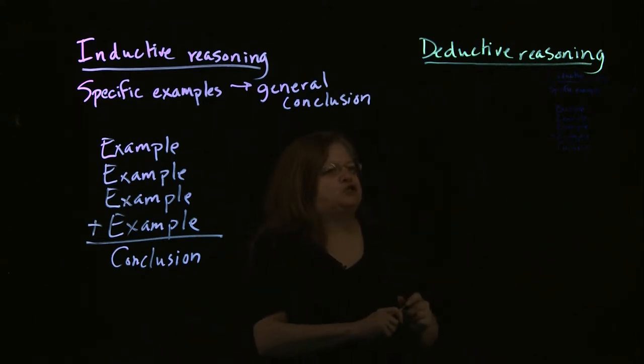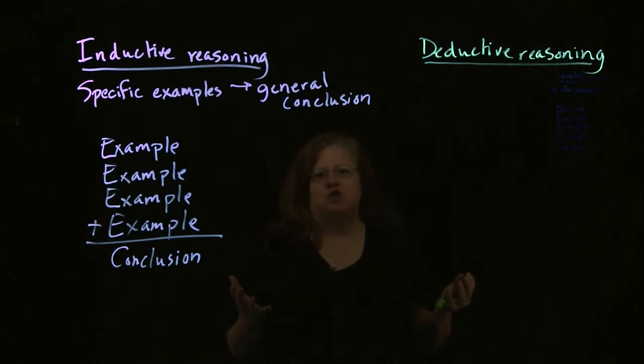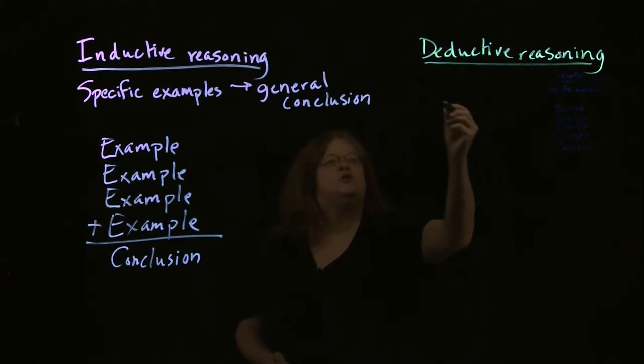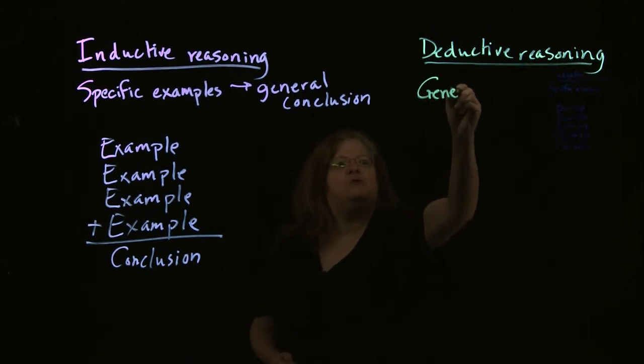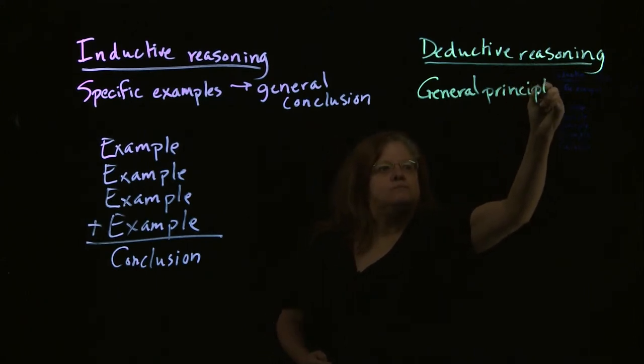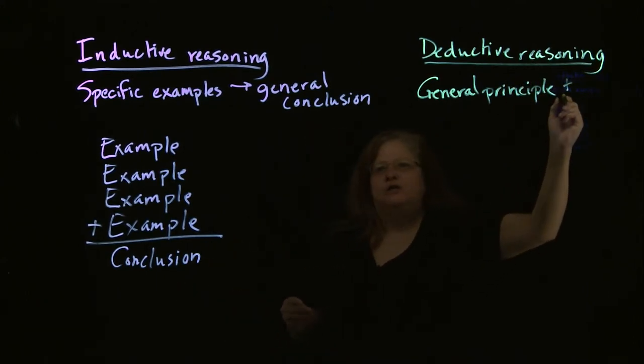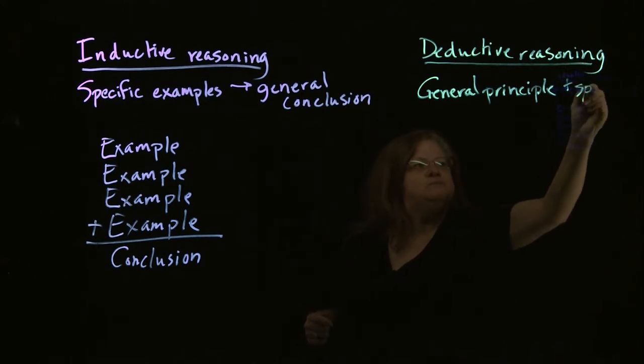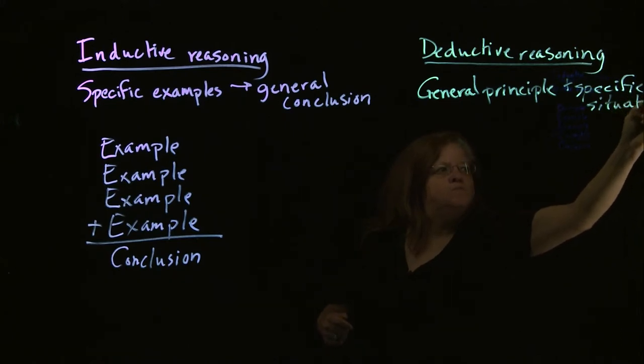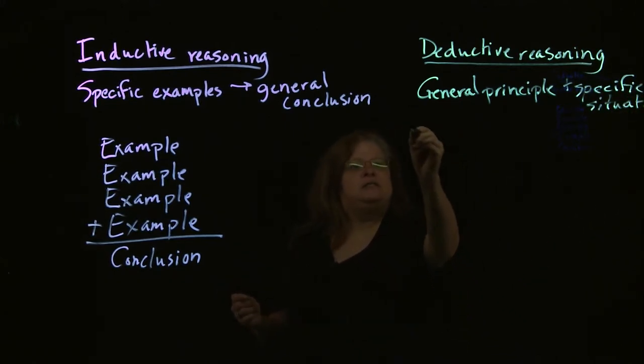Now, deductive reasoning is sort of the opposite. It's often known as moving from the general to the specific. But in deductive reasoning, you start with a general idea or principle, and then you're going to apply that to a specific situation. And then once you've got that, you come to a conclusion.